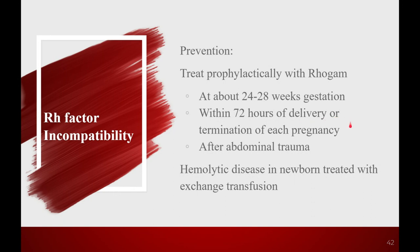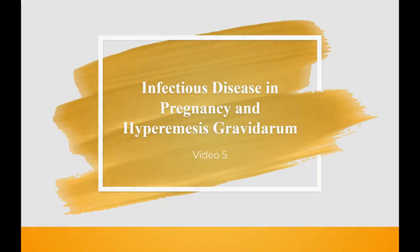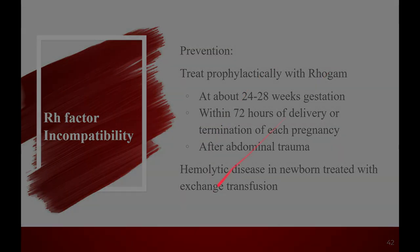Mom also needs Rogam at the end of every pregnancy, no matter how it ends — miscarriage, stillbirth, ectopic, whatever. If there's any chance she could form antibodies against an RH positive fetus, she gets Rogam. If you get hemolytic disease in the newborn, you treat it with an exchange transfusion — phototherapy lights help, but won't do enough. Exchange transfusion means taking all of the baby's blood out and replacing it with blood that has not reacted to those antibodies. And that is the end of our lecture.